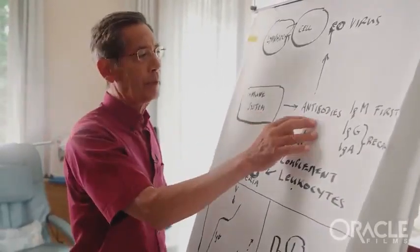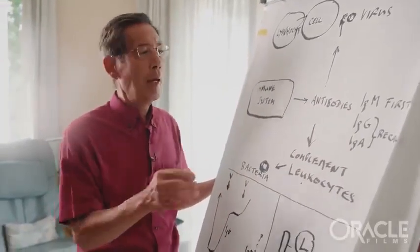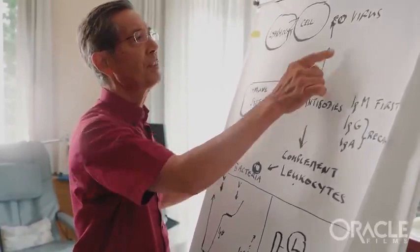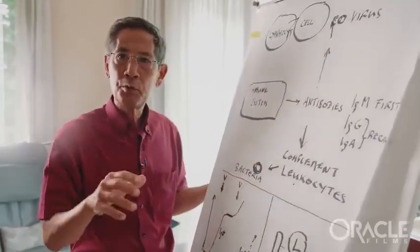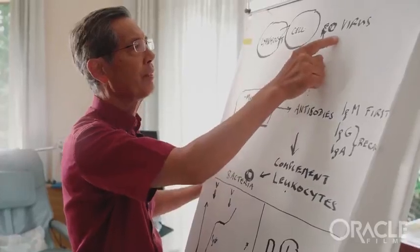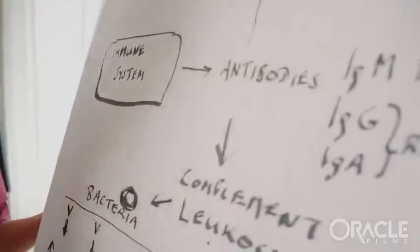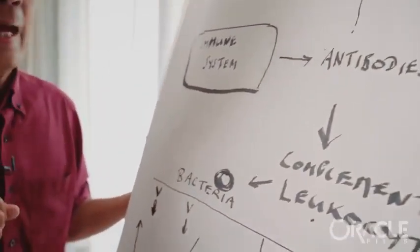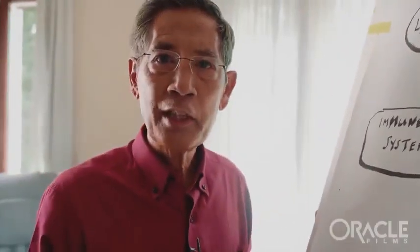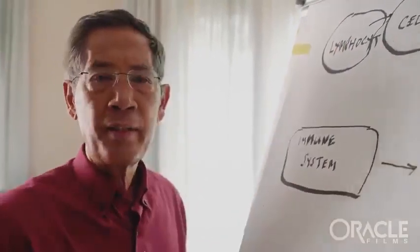Now these antibodies serve principally two functions. One function is that if it's a virus that the antibodies are supposed to combat, the antibodies can try to prevent the entry of the virus into your cell. This is what the antibodies to corona are supposed to do. They are called protective antibodies because they protect the cell from getting infected by the virus.